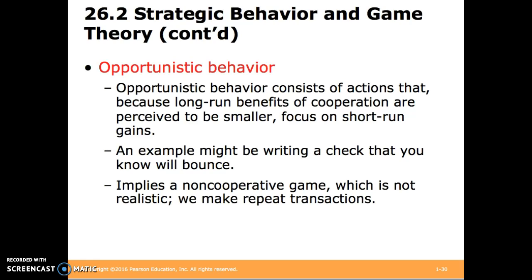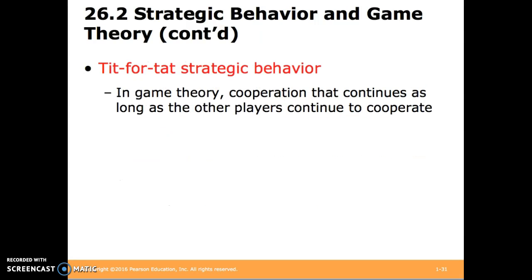Opportunistic behavior consists of actions that focus on short-run gains, usually because we perceive the long-run costs to be lower than the gains in the short run. An example might be writing a check that you know will bounce. Tit-for-tat strategic behavior is a strategy in game theory where cooperation continues as long as both players continue to cooperate.